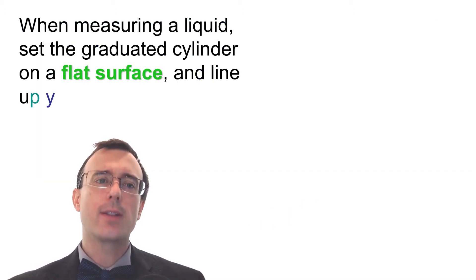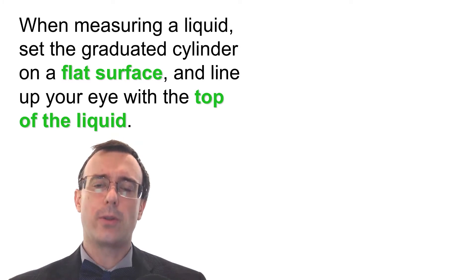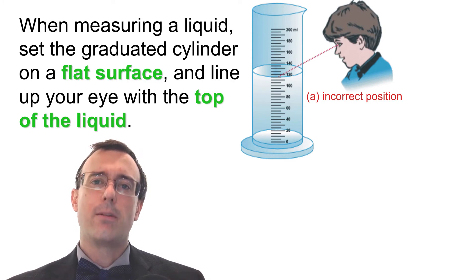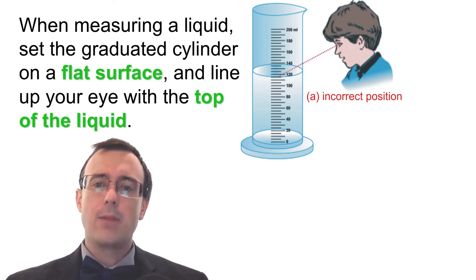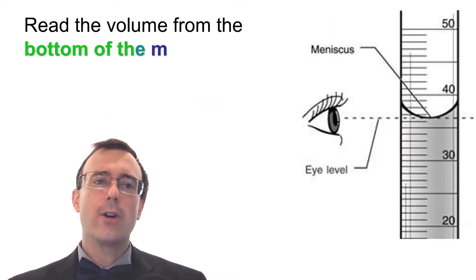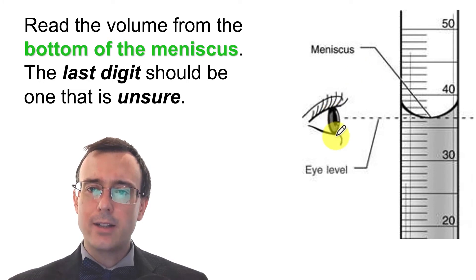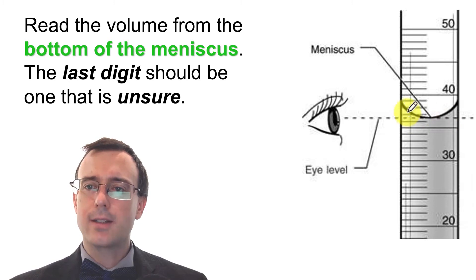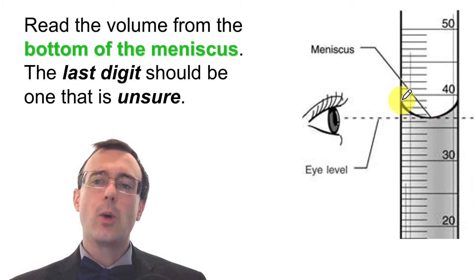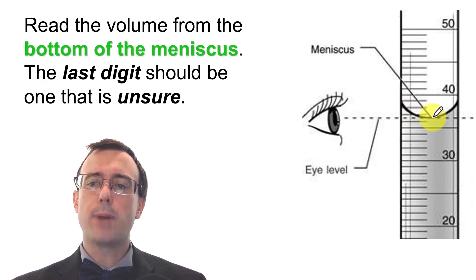When measuring a liquid, set the graduated cylinder on a flat surface and line your eye up with the top of the liquid. Never hold the graduated cylinder with your hand when measuring volume — you'll always get a poor measurement. Don't look down or up at the volume either. Read the volume from the bottom of the meniscus; the last digit should be the one that is uncertain. These measuring devices are always designed for you to read from the bottom of the meniscus for the most accurate measurement.